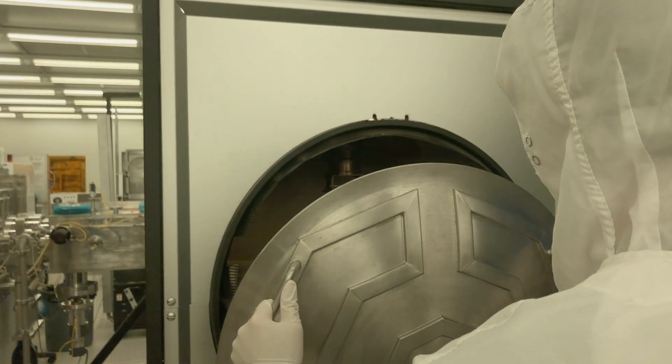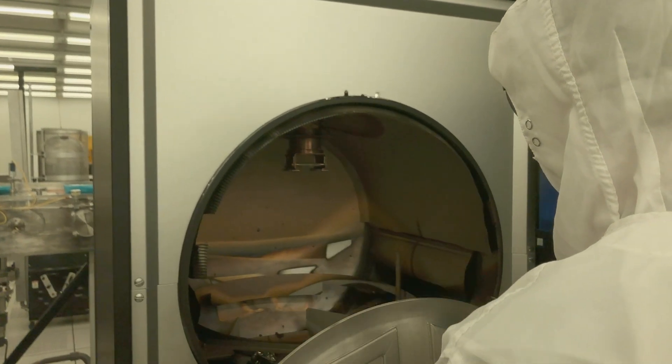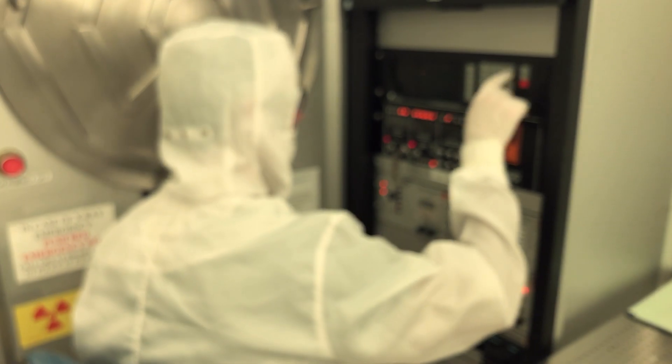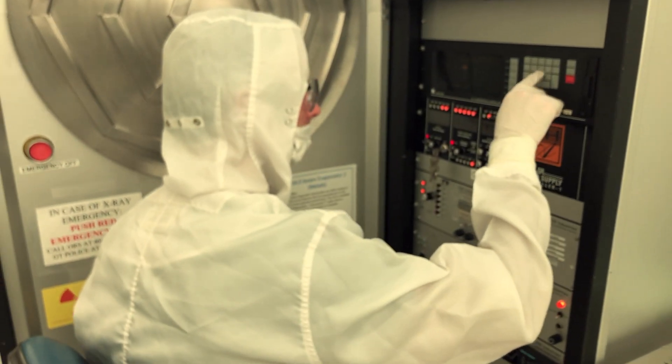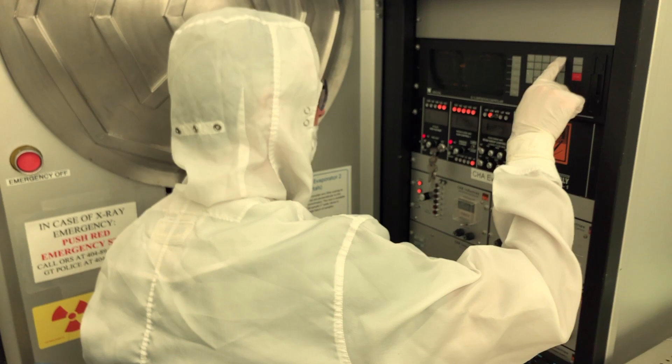The CHA Mark 40 Electron Beam Evaporator is used to coat samples with various metals. During a process, a high-intensity beam of electrons is focused on the center of a crucible containing a specified source metal. The energy from the electron beam causes the source metal to evaporate. The evaporated metal will then coat the surface of a sample with a thin layer.